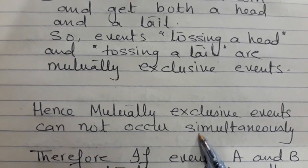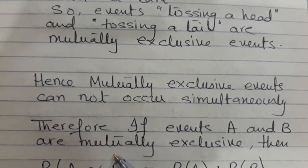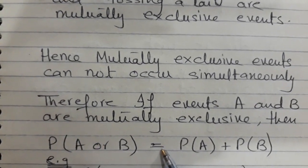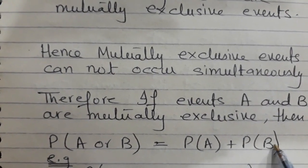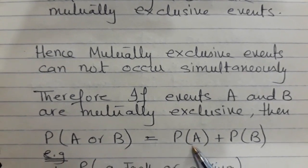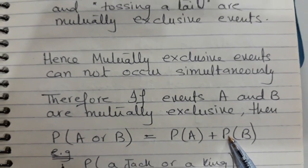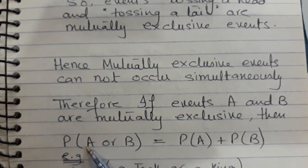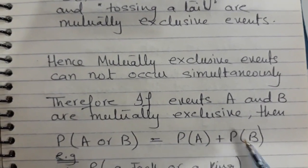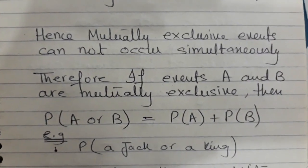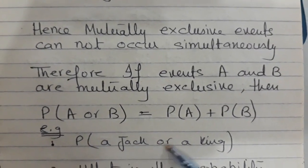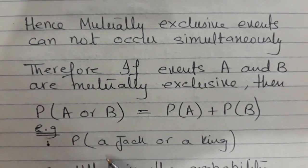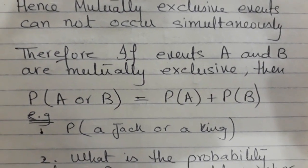Since mutually exclusive events cannot occur simultaneously, if events A and B are mutually exclusive, then P(A or B) = P(A) + P(B). Basically, when you want to know whether this event OR that event occurs, you add their probabilities. Returning to the earlier example: probability of drawing a jack or king was 8/52 because there are 4 jacks plus 4 kings in the pack — we added them together.